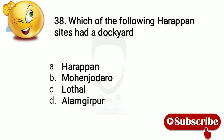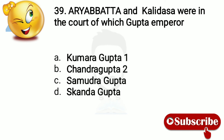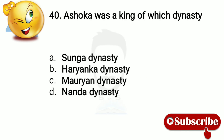Question 37: Which of the following Harappan sites had a dockyard? Option number C, Lothal. Question 38: Aryabhatta and Kalidasa were in the court of which Gupta emperor? Option number B, Chandragupta II. Question 39: Ashoka was a king of which dynasty? Option number C, Mauryan dynasty.